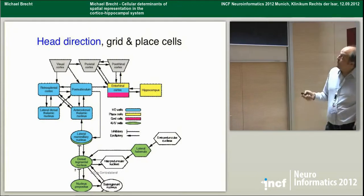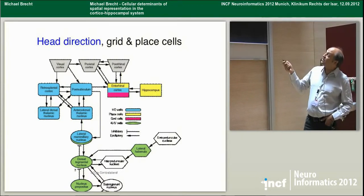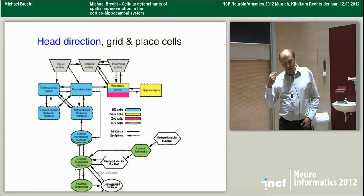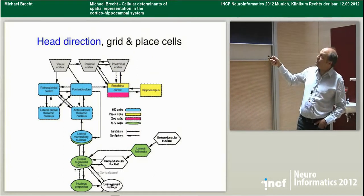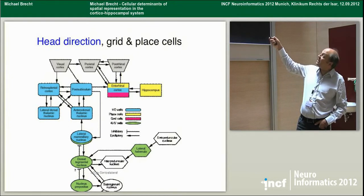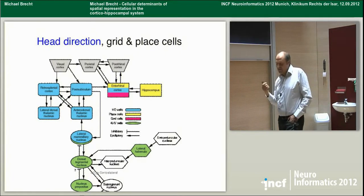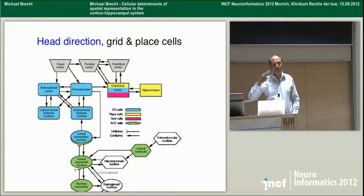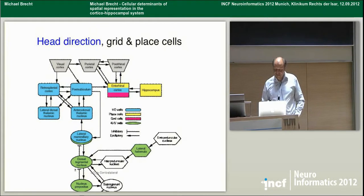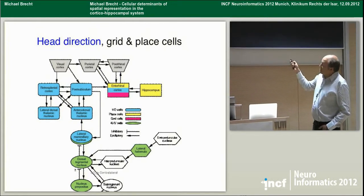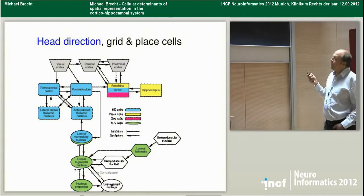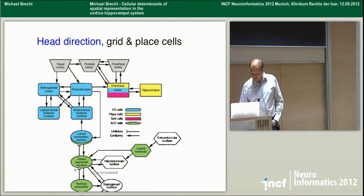Today I want to talk about hippocampus and entorhinal cortex. Entorhinal cortex is an interesting place — head direction information, which is very heavily linked to the vestibular system, is integrated there, and we see in the entorhinal cortex for the first time allocentric coding, spatial responses that are not egocentric, unlike the ones we find in the sensory cortices. I will also talk about the hippocampus, which has this special ability to form memories very fast in single trial learning.